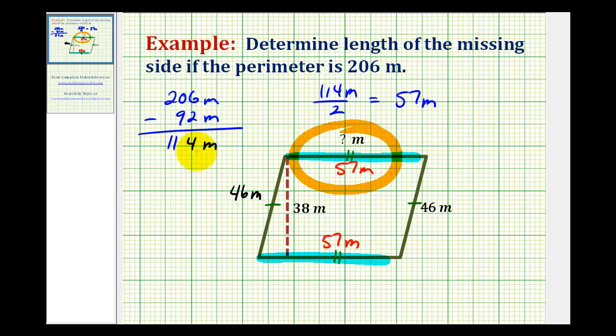Now to me this is a logical way to solve this problem. But if we had to solve this using an equation, we could label the missing side here x, which means the opposite side would also be x.